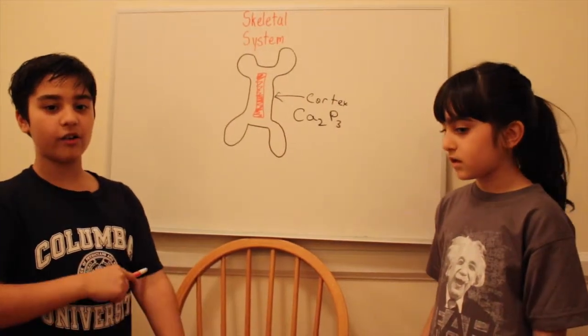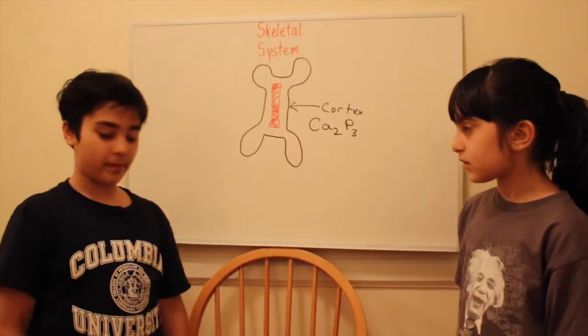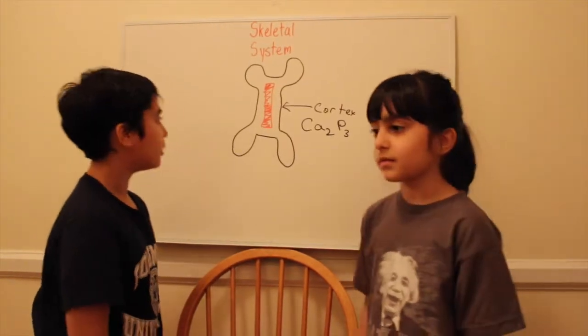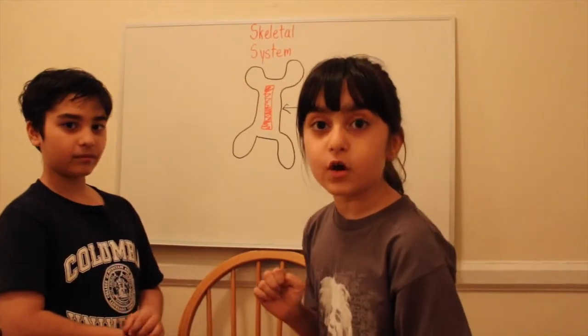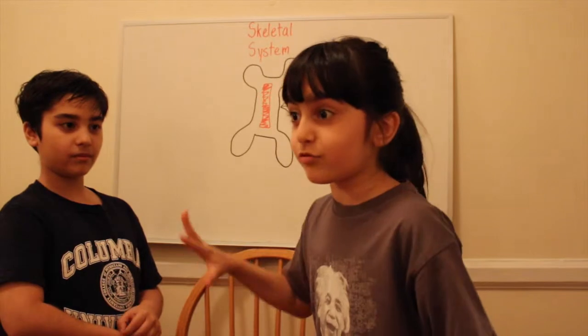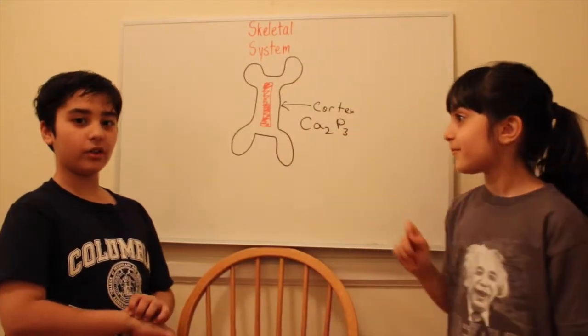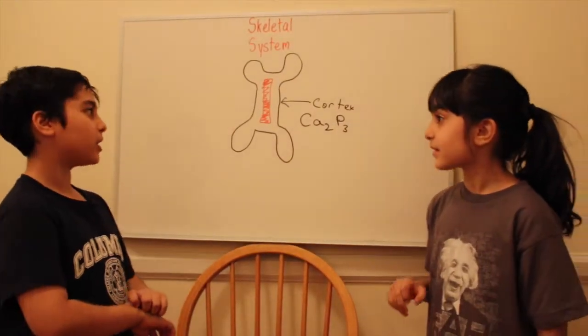The bone marrow is very important because it makes the red blood cells which go down your blood stream and make your entire body function. When they're babies they're called the erythroblasts, and when they're older they're called erythrocytes or red blood cells.